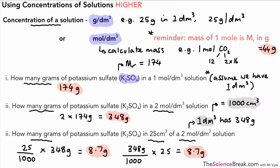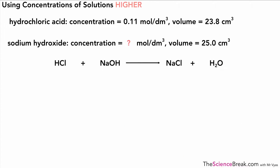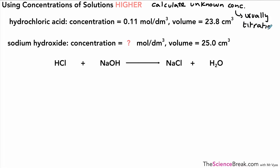We've worked out grams from concentrations of solutions. Next, we're going to work out concentrations of unknown solutions when two chemicals in solution react. This is usually linked with titrations — if you're doing chemistry you'll be working with titrations, but if you're doing trilogy or the combined science course, you still need to know how to do these calculations.